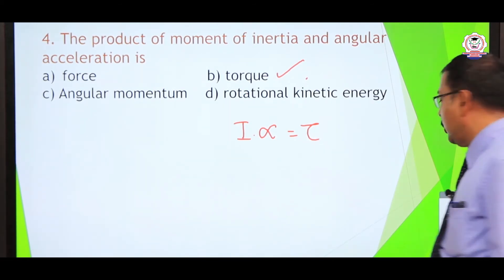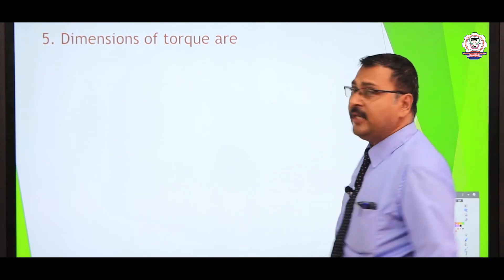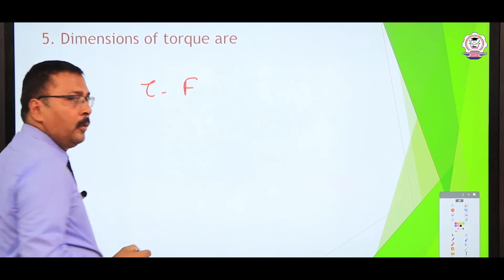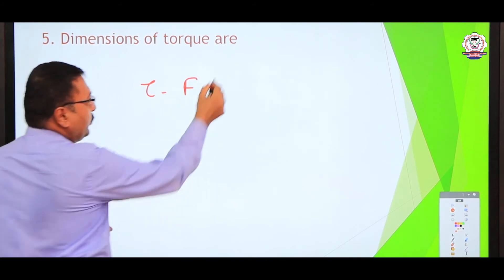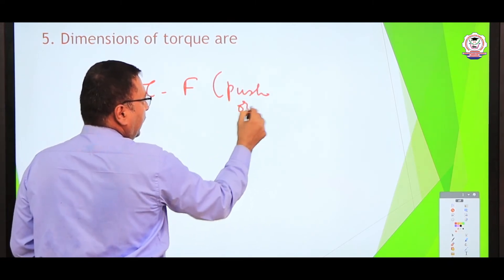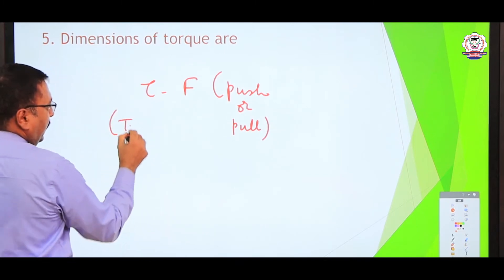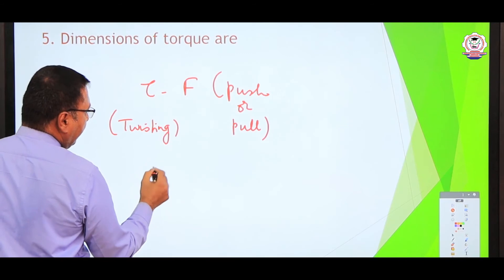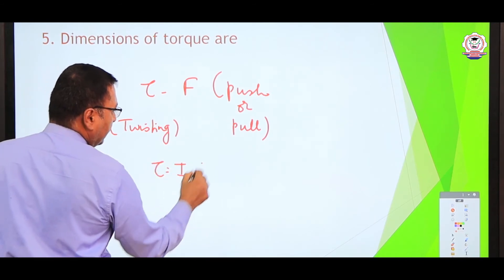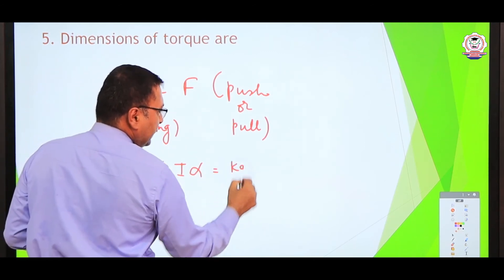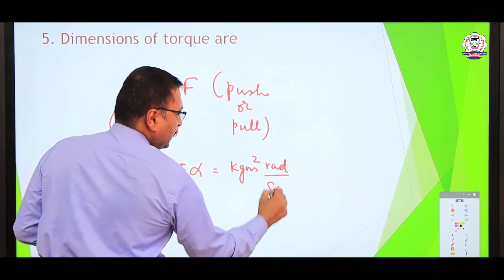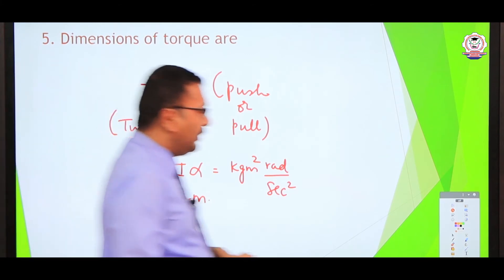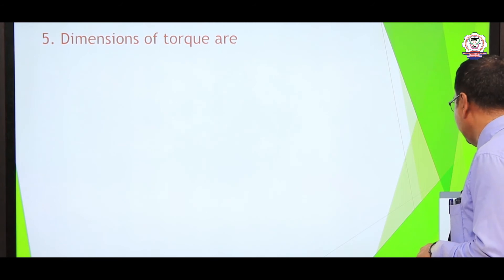Very simple questions like this will come in NEET — you can score 4 marks easily. Next: dimensions of torque. Torque tau equals I times alpha. Moment of inertia is in kilogram meter squared, and alpha is in radians per second squared, so torque equals kilogram meter squared per second squared, which is equivalent to Newton meter. Analyze the options carefully rather than blindly selecting what you think is correct.